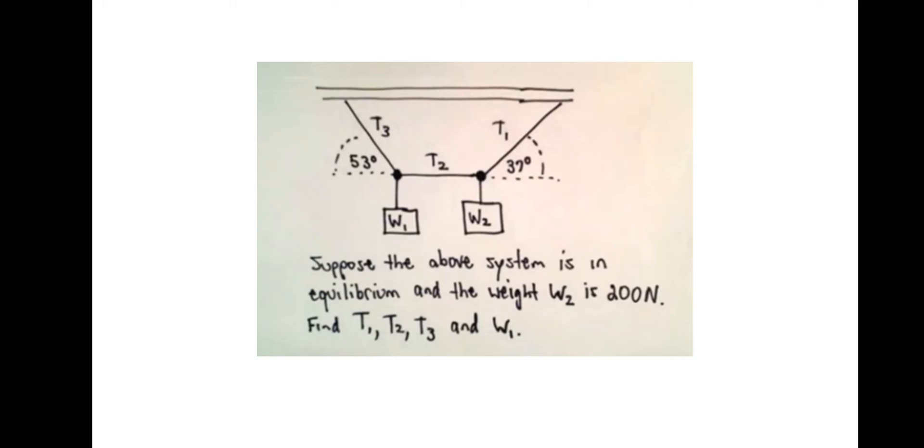So if you've got this one just pause the video. And then this one might take a while. Take some thinking. And then I'll take you through it to do it in full. So supposedly the above system is in equilibrium and the weight W2 is 200 newtons. Find tension 1, tension 2, tension 3, and weight 1.